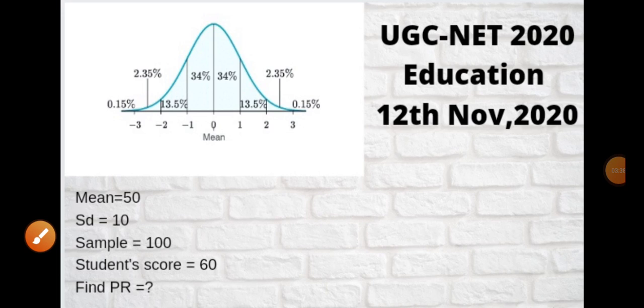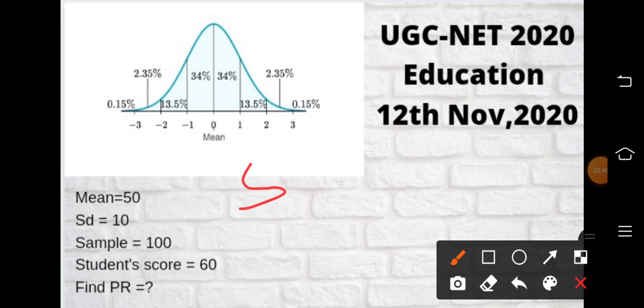So 50 plus 34 percent, that means below the mean there are 50 percent cases, and from the mean to one standard deviation or one sigma, 34 percent cases lie. That means there are 84 percent cases.